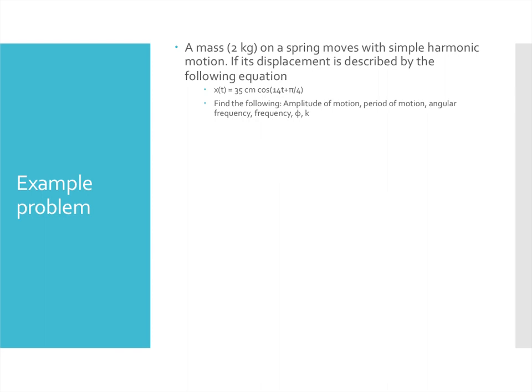In this problem, this is just practicing identifying the different constants that we see in these equations of motion. We might want to compare this to the general expression that we saw in our book, A cosine omega t plus phi, and so we know that this number out in front is our amplitude, so that is 35 centimeters.